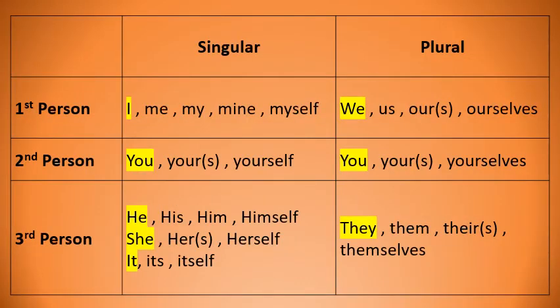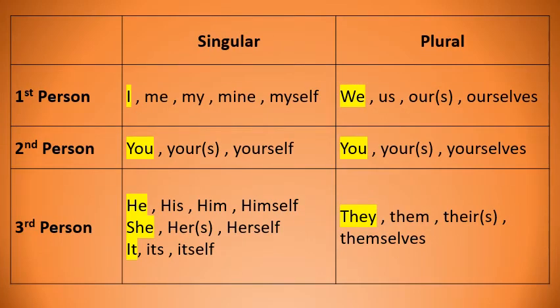What is a subject pronoun? We know that a pronoun is a word that takes the place of a noun. Subject pronouns come before the verb and do the action in a sentence. Every complete sentence has a subject, a verb, and an object. The subject is always a person, place, or thing. In this table you will understand singular and plural in first, second, and third person. First person singular: I, me, my, mine, myself. First person plural: we, us, our, ourselves.